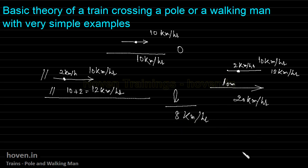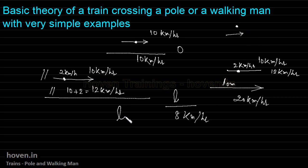So this is how you can tackle even very tough questions — it is an extension of the theory for a train moving past a single point. Whatever be the situation of that point, whether it is standing as a pole, walking as a man, or walking inside a moving train, the story remains the same: it is the length of the train divided by the speed of that train with respect to that point. This is the whole fundamental. Now let me take a few simple examples to illustrate these concepts.